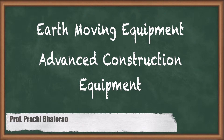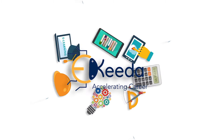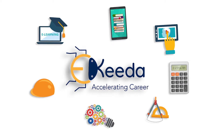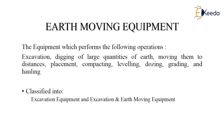In this video, we are going to study about earth moving equipment. Earth here defines the soil present on the ground, moving means it is not constant, and equipment is a machine. So the equipment which performs excavation, digging of large quantities of earth or soil, moving them to distances, placement, compacting, leveling, dosing, grading, and hauling — that equipment is called earth moving equipment.